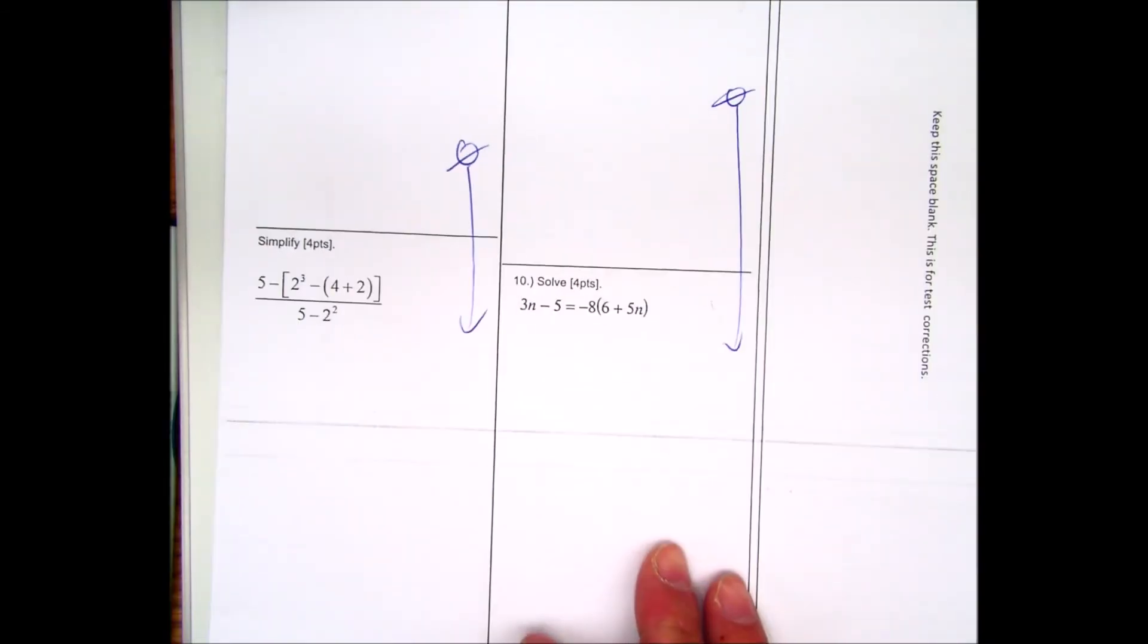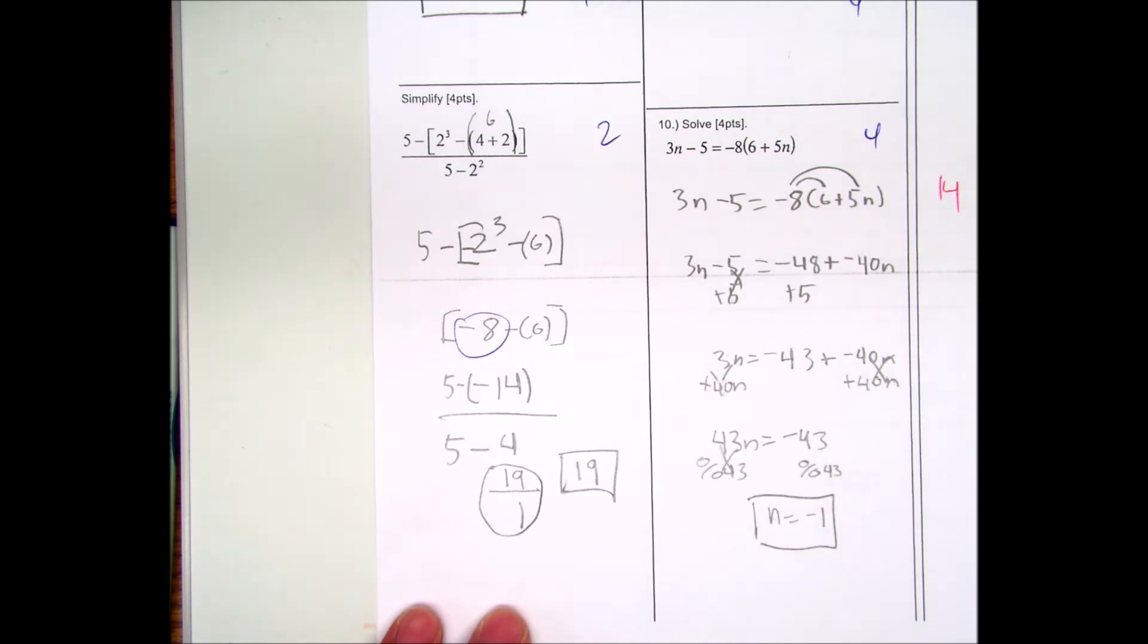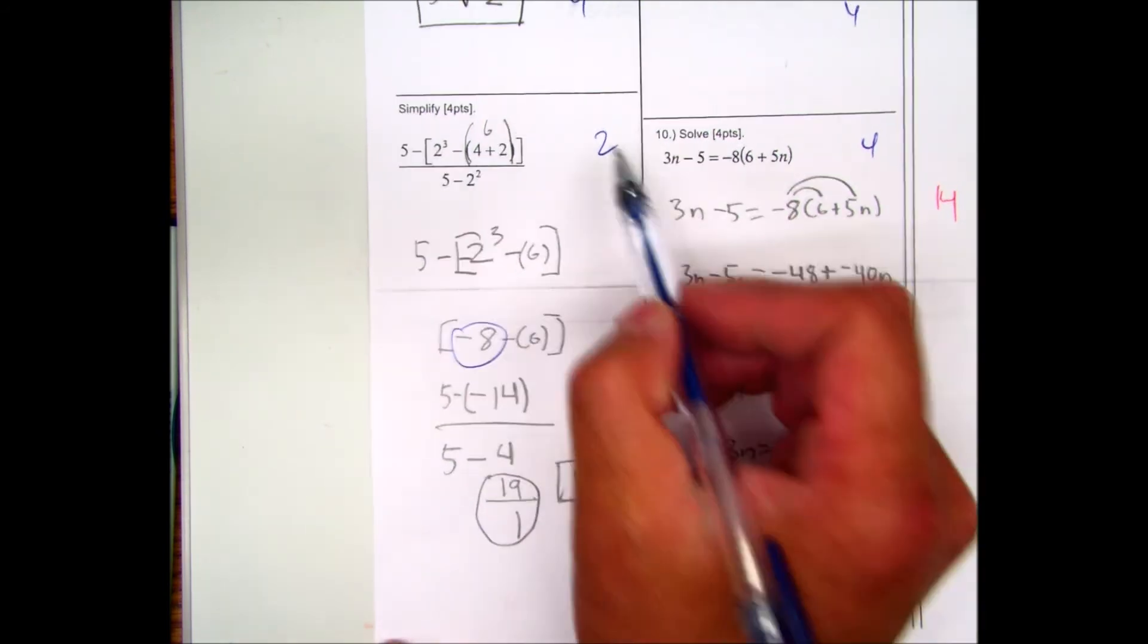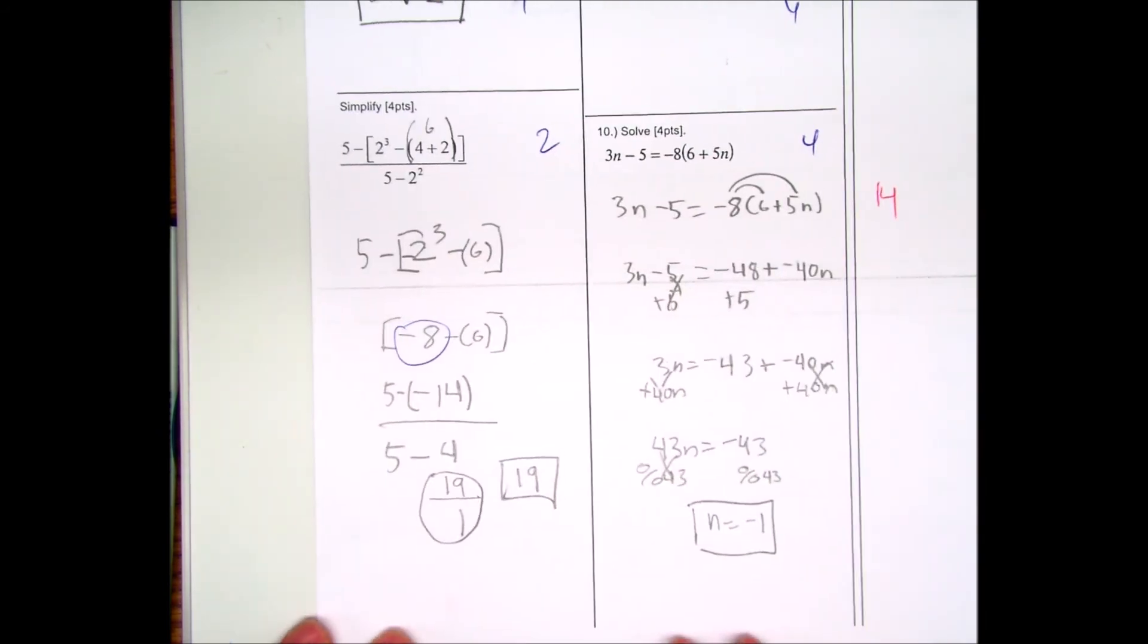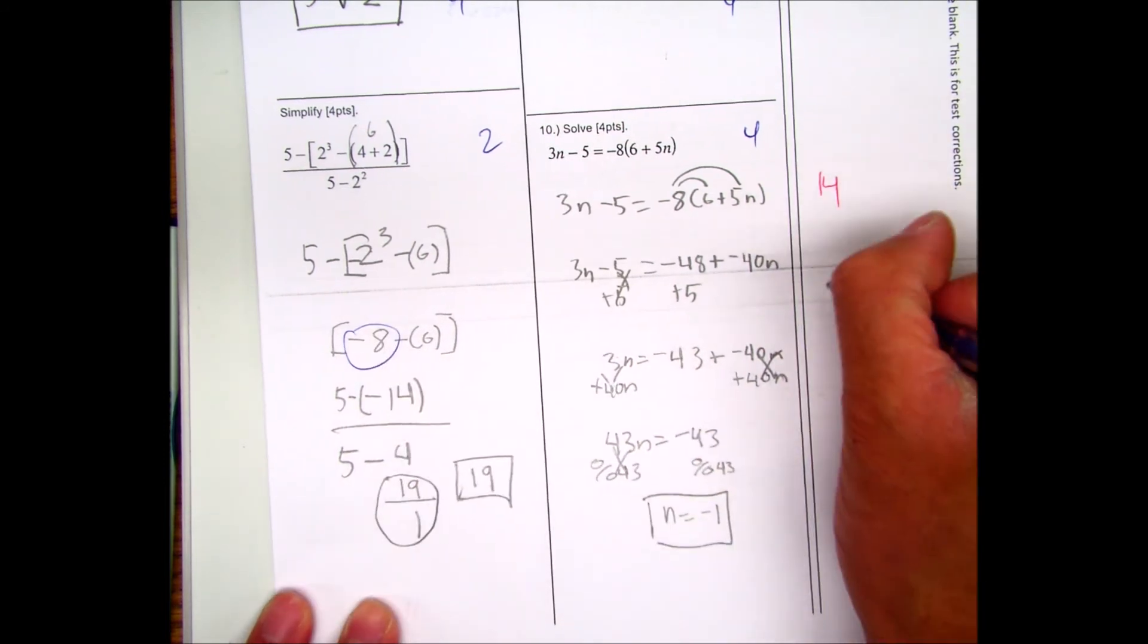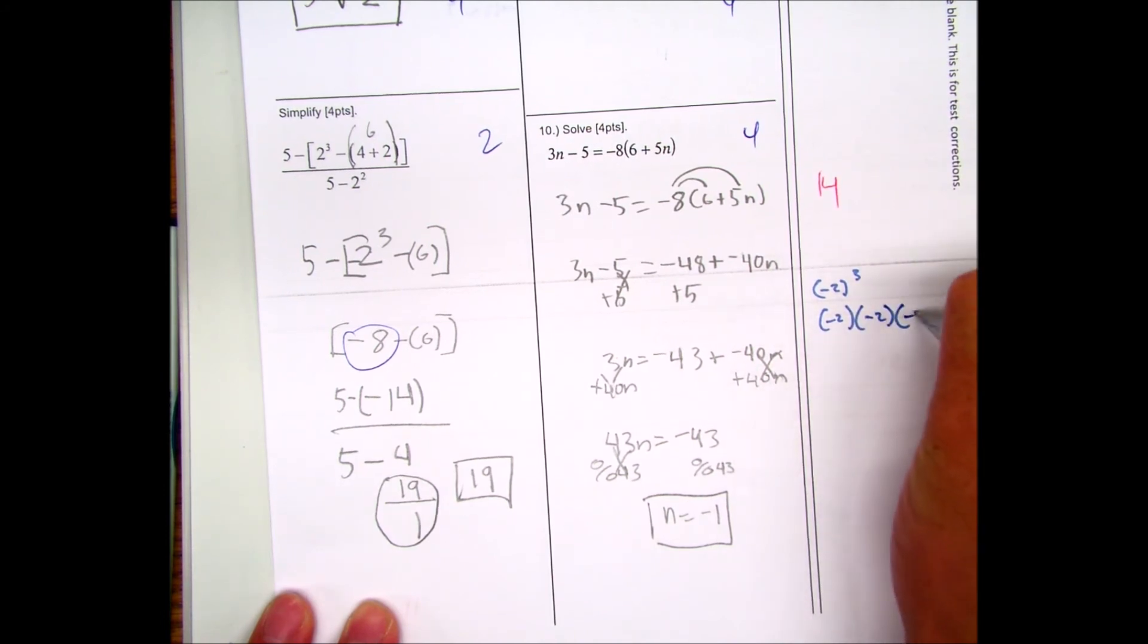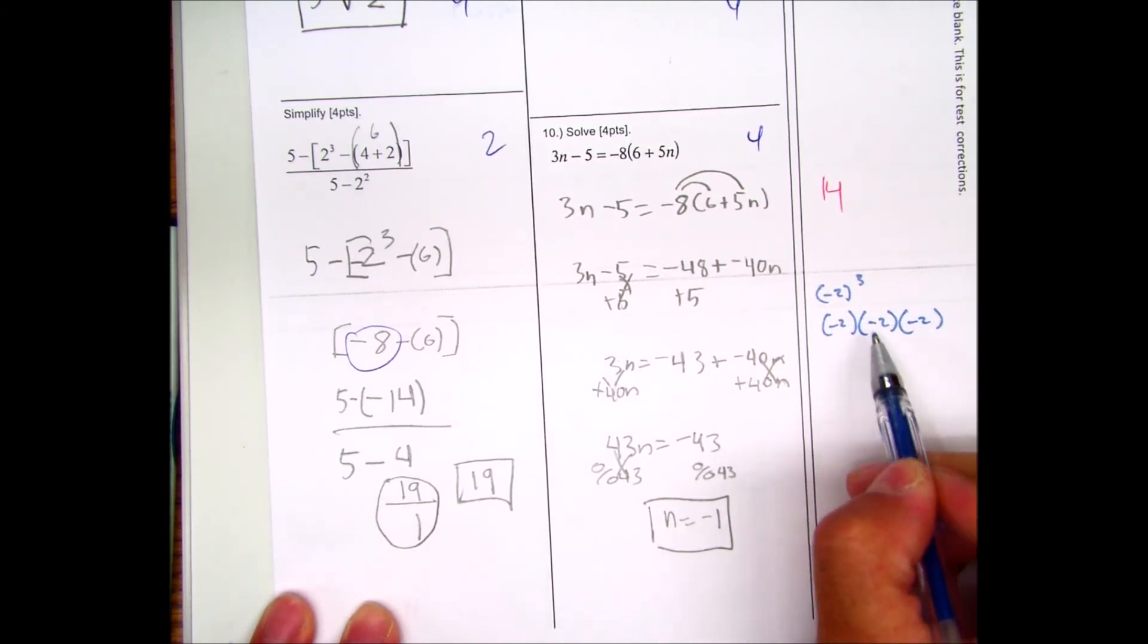Maybe if you left it blank you can just redo the problem there in the space. Or you can also look for maybe parts that you got wrong. So this student got two points out of four. And then maybe write to yourself, negative 2 times, so the third power is negative 2 times negative 2 times negative 2. So positive times negative is a negative.